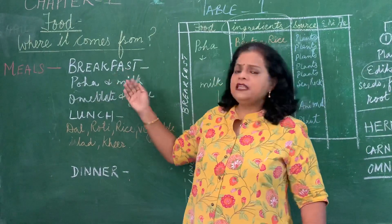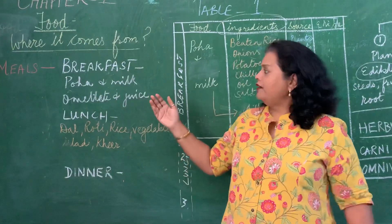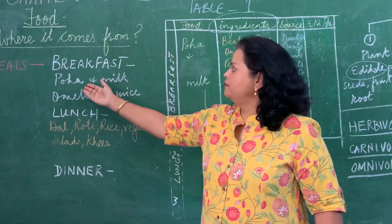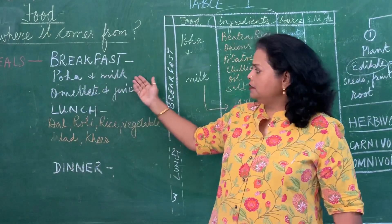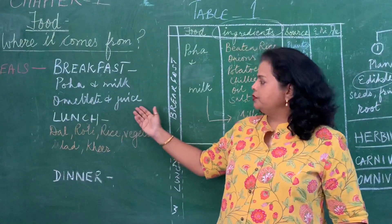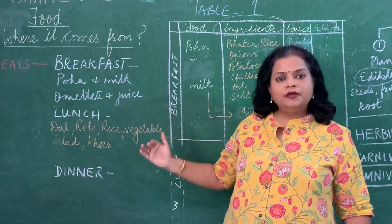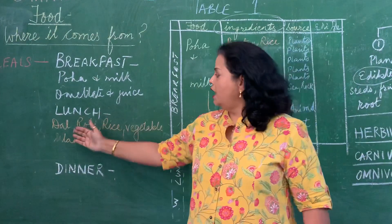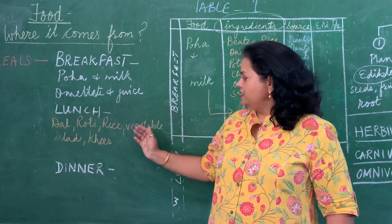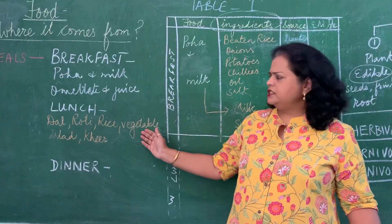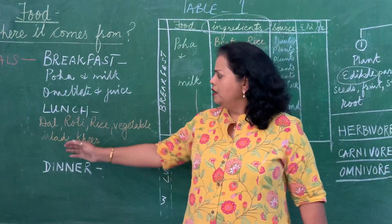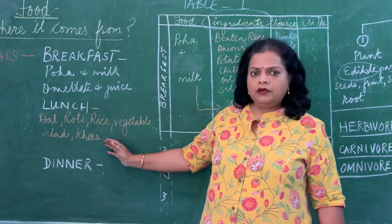Now let's see what did we have for our breakfast. Suppose I had milk. My friend, she had milk and juice. Similarly, for lunch: dal, roti, rice, vegetables — you can eat any vegetables — salad and more.